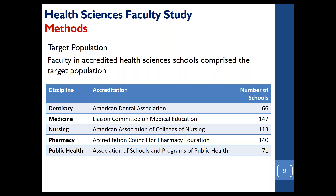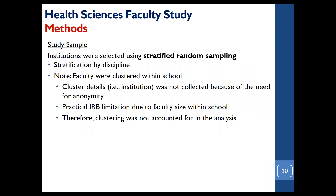The target population in our study were faculty in accredited health science schools. We relied on accrediting bodies for each of the disciplines to obtain lists of schools. This comprised our study population: 66 dental schools, 147 schools of medicine, and so forth. Myungjung is going to tell you a little bit more about our probability sample.